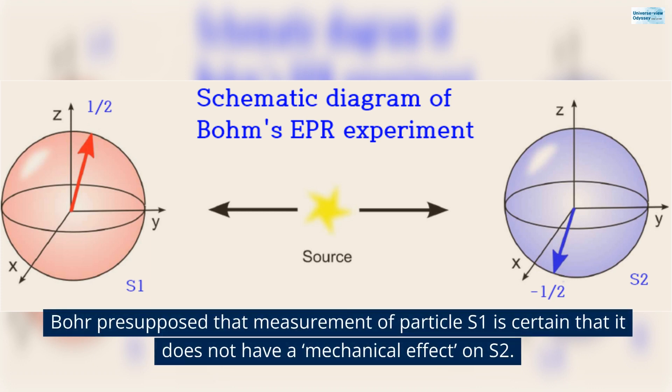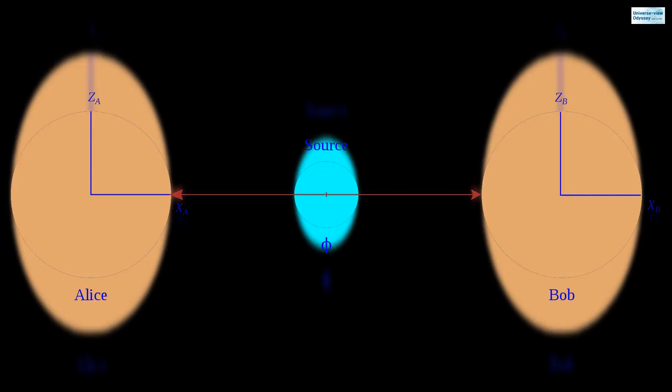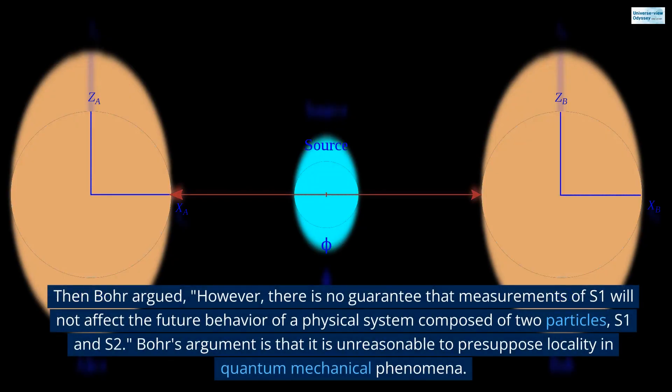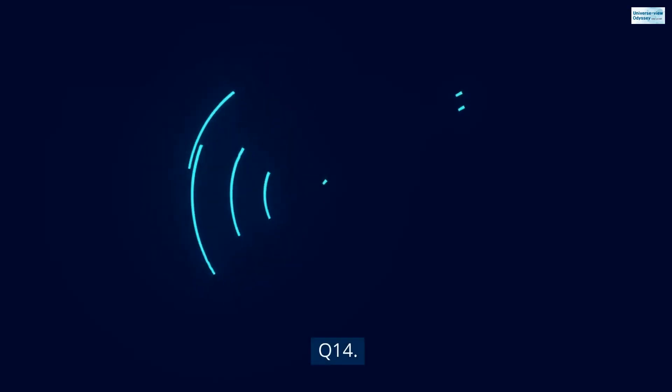Bohr presupposed that measurement of particle S1 is certain that it does not have a mechanical effect on S2. Then Bohr argued, however, there is no guarantee that measurements of S1 will not affect the future behavior of a physical system composed of two particles, S1 and S2. Bohr's argument is that it is unreasonable to presuppose locality in quantum mechanical phenomena.